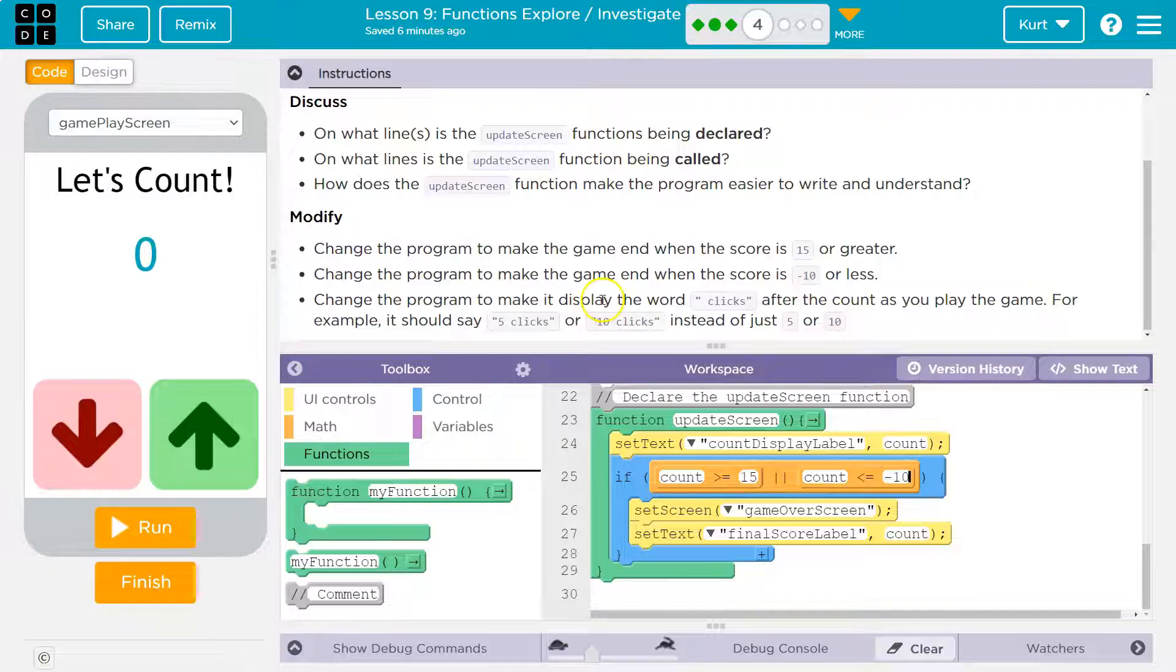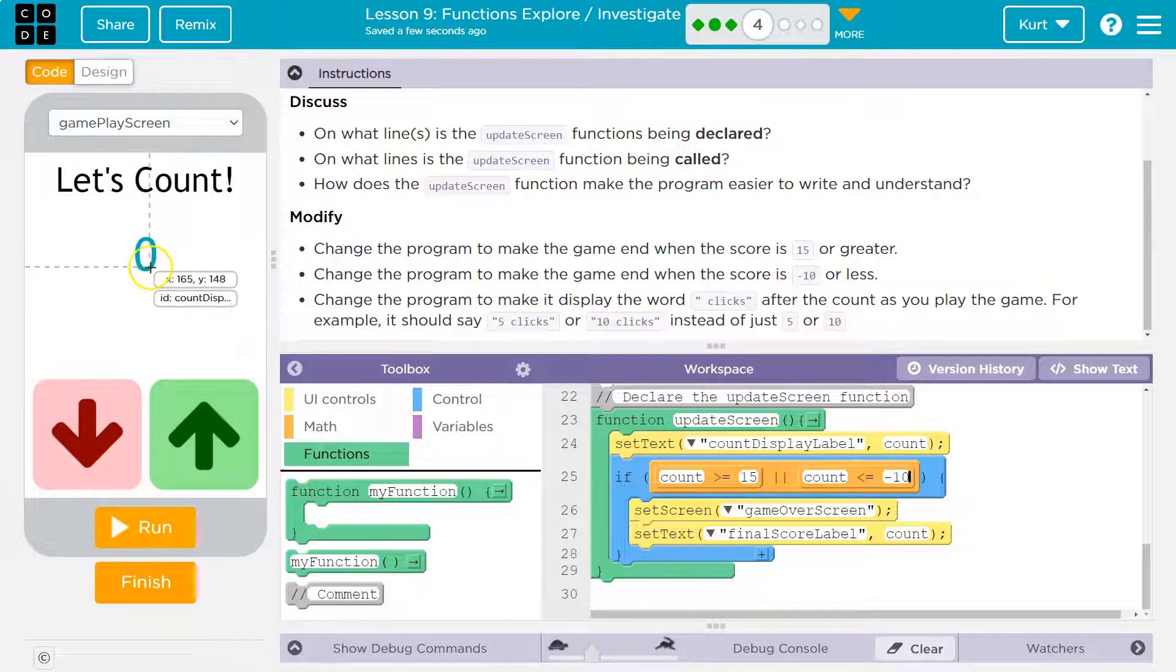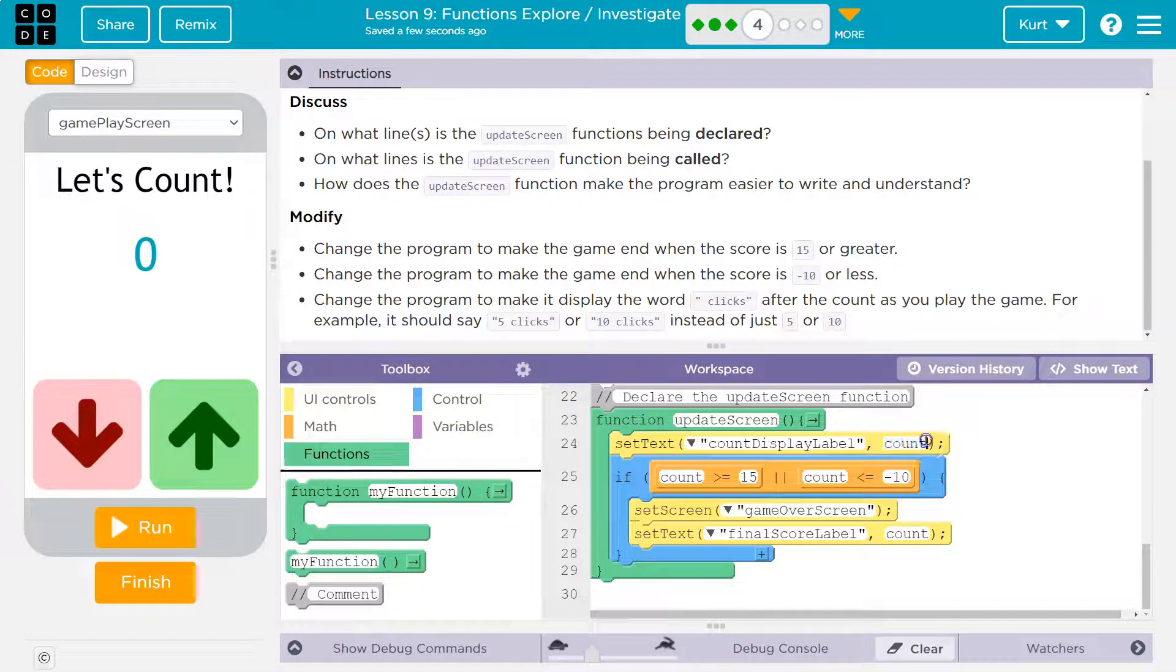Change the program to make it display the word clicks after the count as you play the game. For example, five clicks, 10 clicks. All right, so that's going to be update screen. Well, what's this thing called counter display? So where do we update counter display? Oh, right there. Now, right now it's just putting the number count. We need to add clicks to that.